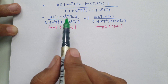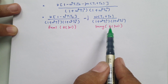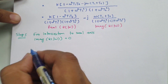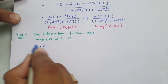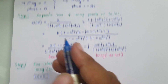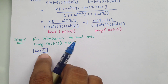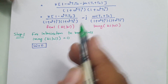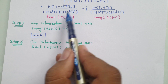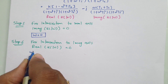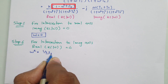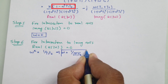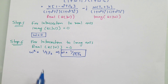To find the intersection with the real axis, we equate the imaginary component to zero, which gives ω equals 0 — already calculated. To find the intersection with the imaginary axis, we equate the real component to zero. This gives ω²T1T2 equals 1, so ω equals 1 divided by the square root of T1T2. This is the frequency at which the plot intersects the imaginary axis.